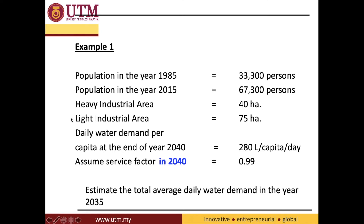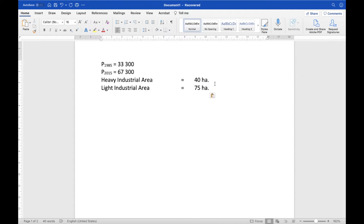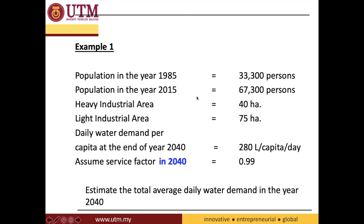The heavy industrial area is 40 hectares and the light industry area is 75 hectares — those are important pieces of information. The daily water demand per capita at the end of the year 2040 is 280 liters per capita per day.